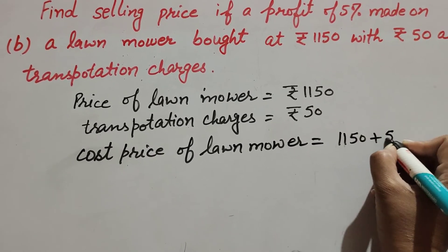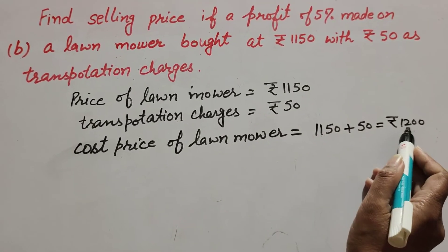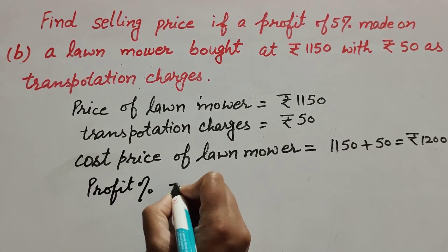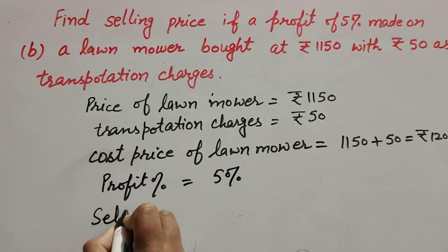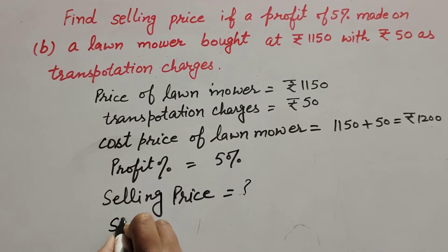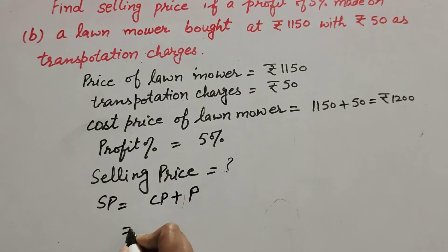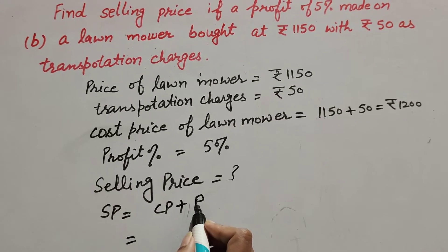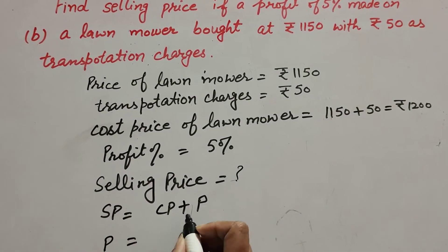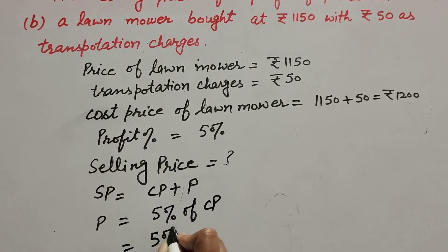Cost price of lawnmower is 1150 plus 50, which is equal to rupees 1200. So rupees 1200 is the cost price of the lawnmower. Profit percentage is also given — it is 5 percent. We find its selling price using the formula: selling price is equal to cost price plus profit. We need profit but the given thing is profit percentage, so first we find the profit.